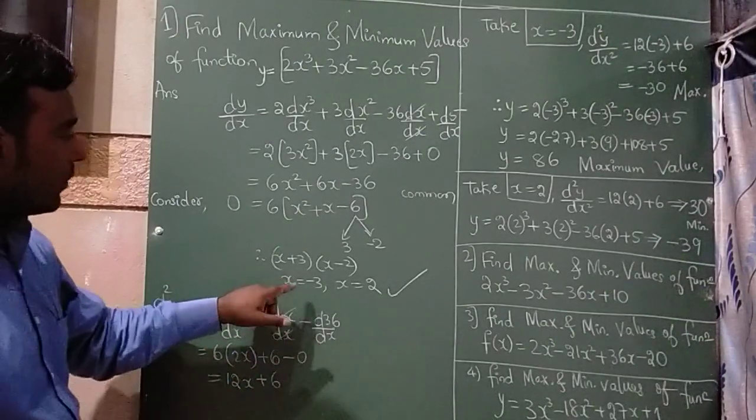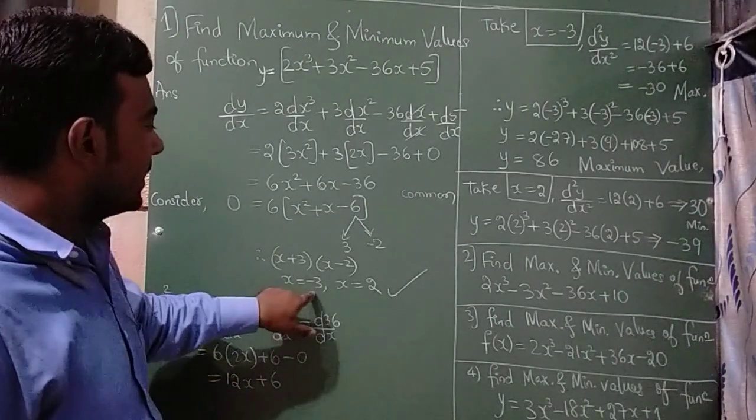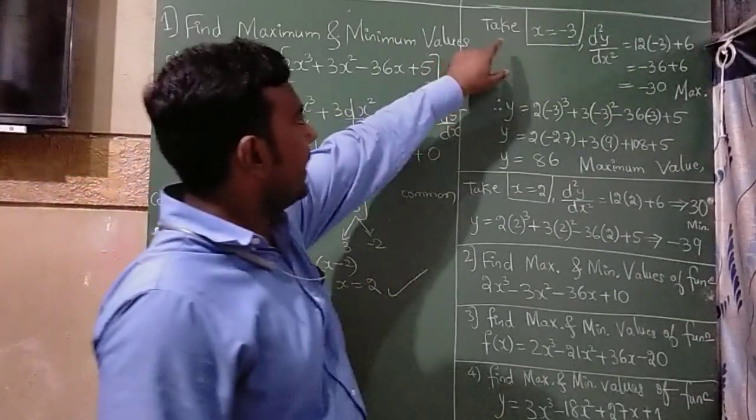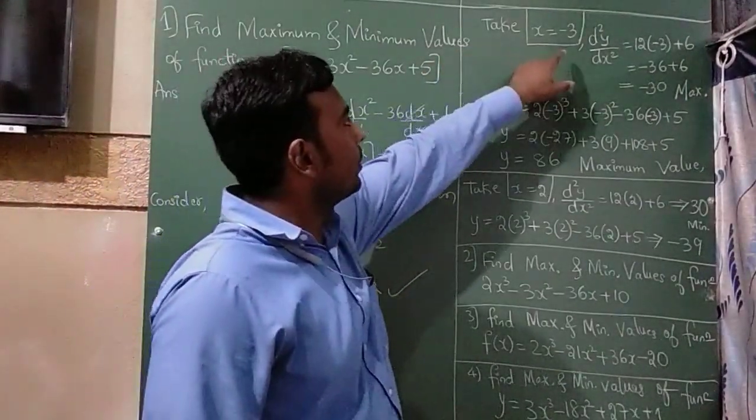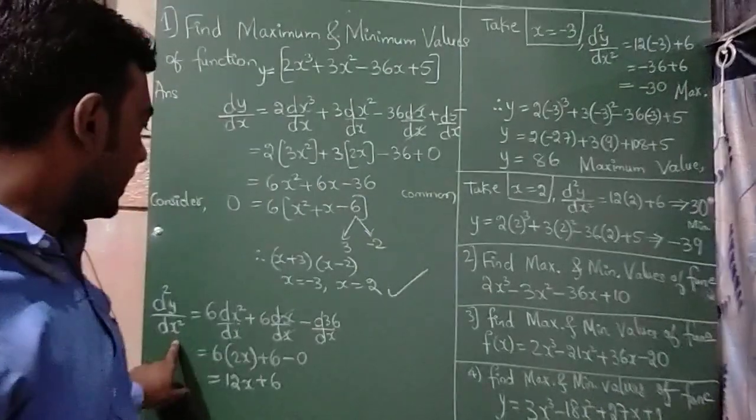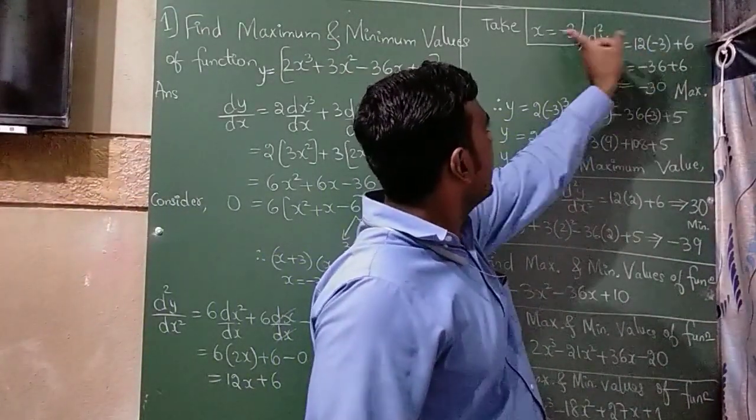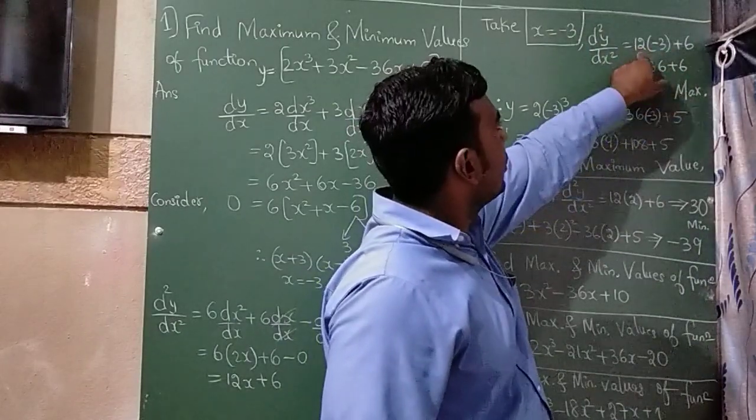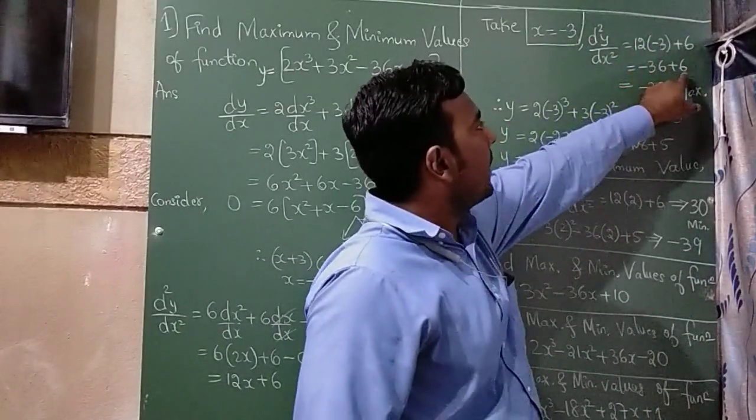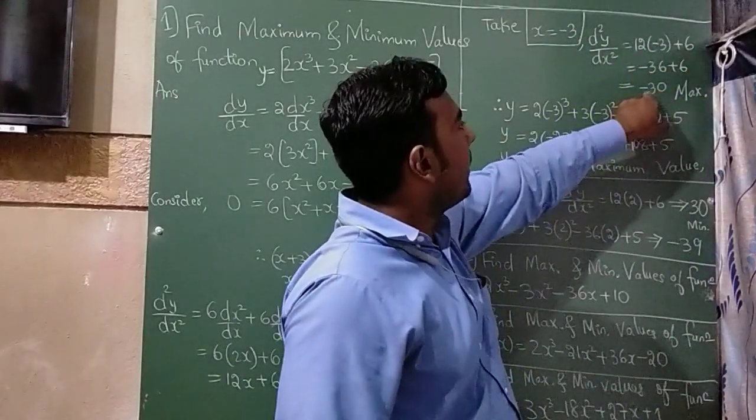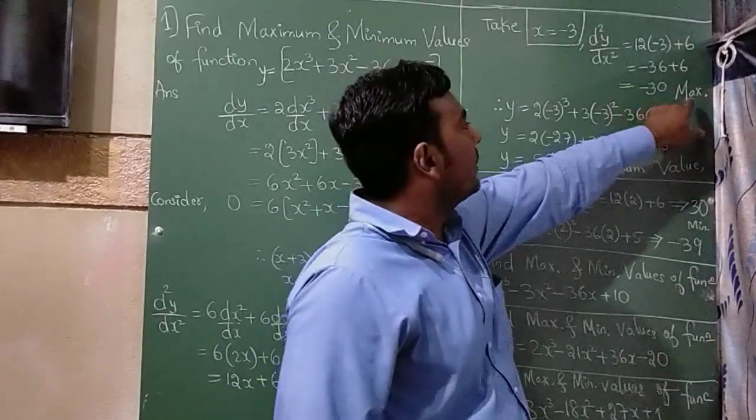Now we have got 2 values of x, one is minus 3 and one is 2. I am going to take first value, that is x = -3. In this double differentiation, I am going to put the value of x. So if I put x = -3, so 12 times -3 is -36 plus 6. So I will get -30. So this is the maximum.